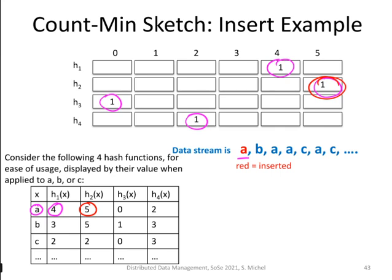And then we continue, of course, we're doing next for b, and you see how the sketch changed. We have additional ones, but also we have a two here. So there was apparently, well, apparently, but there was for a and b, the hash function two, which would produce the same position, even so, of course, the values were not the same.